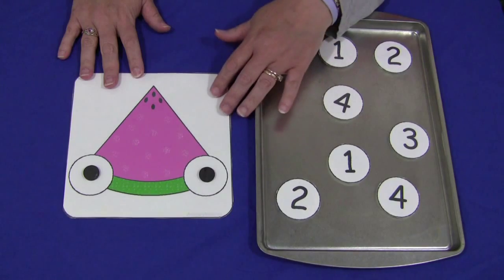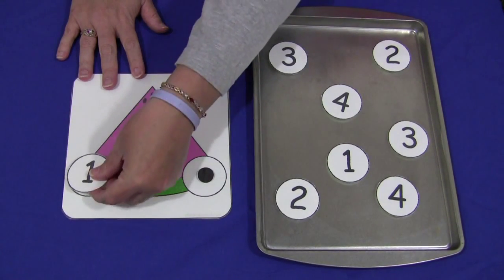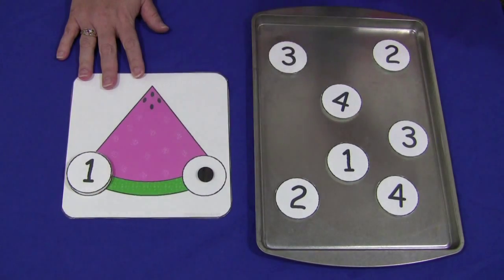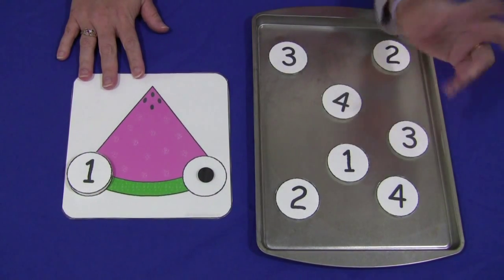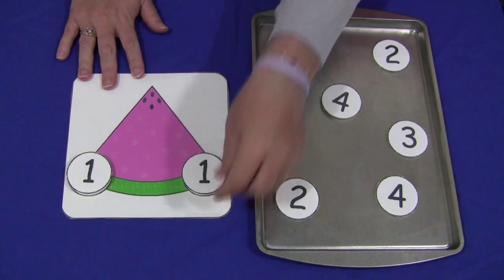I would have the numbers sitting out along with the mat and what the children would do is they would find one number and put it on the left side of the mat and then they would try, out of all the numbers, to find the number that matches that number and then stick it on that side of the mat.